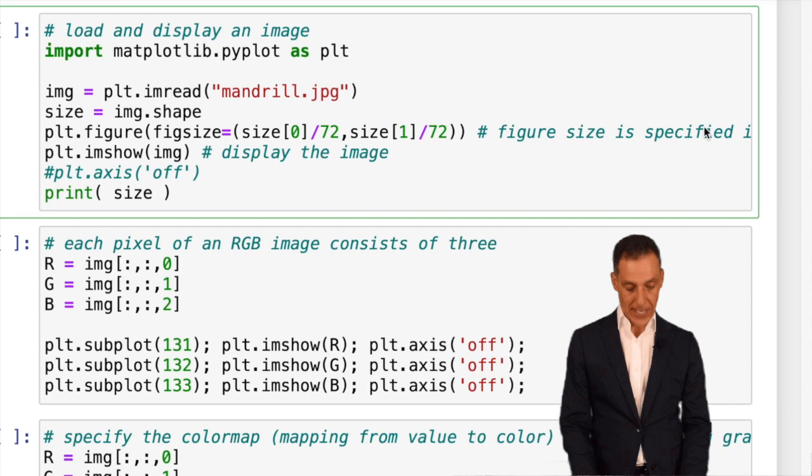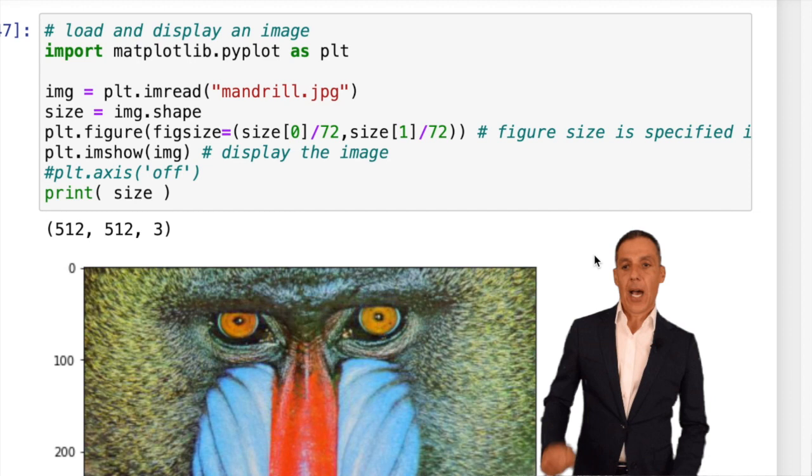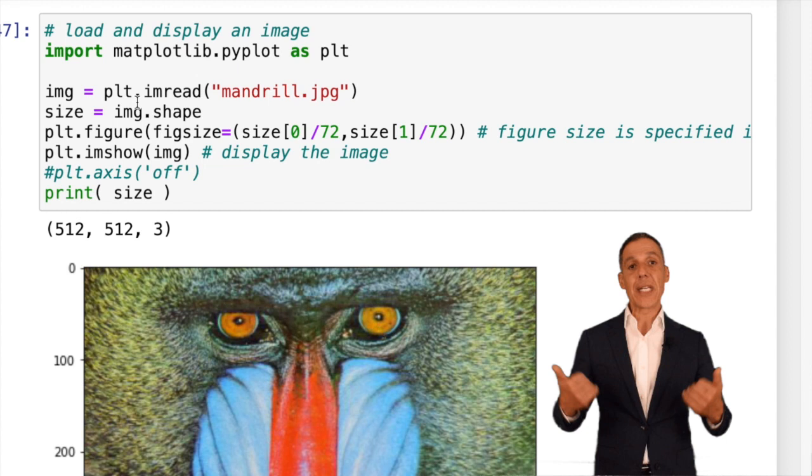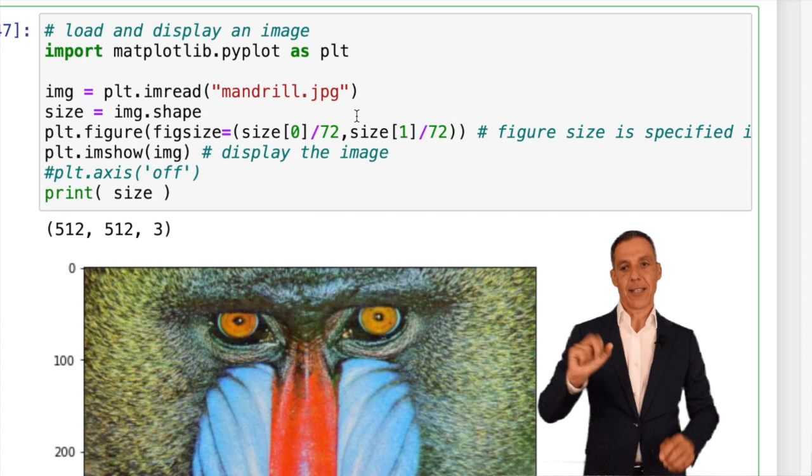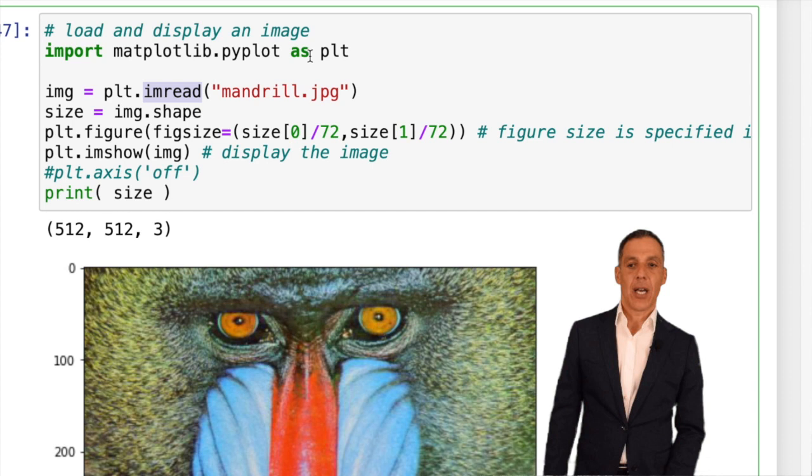Let's talk now about images. So let me go ahead and evaluate the cell and then I'll explain what the code is that we have here. Matplotlib, in addition to being able to plot data, has a mechanism for reading and displaying digital images. Here I have an image called mandrill.jpg in the same directory, and I'm going to read that file using the matplotlib pyplot command imread.